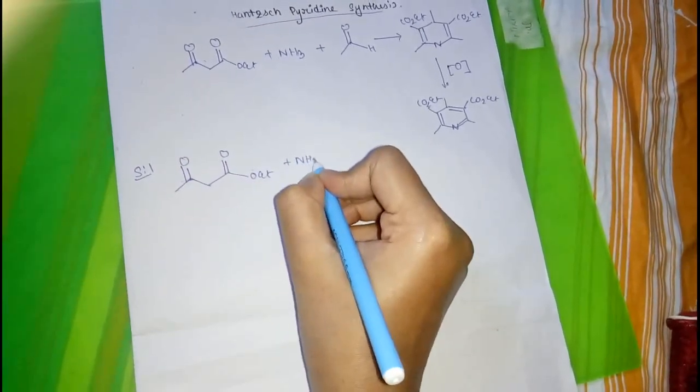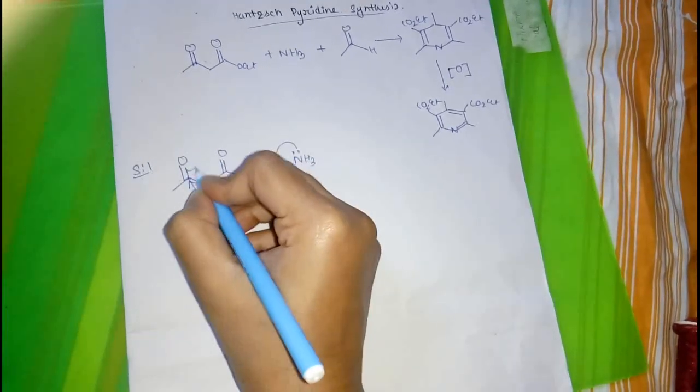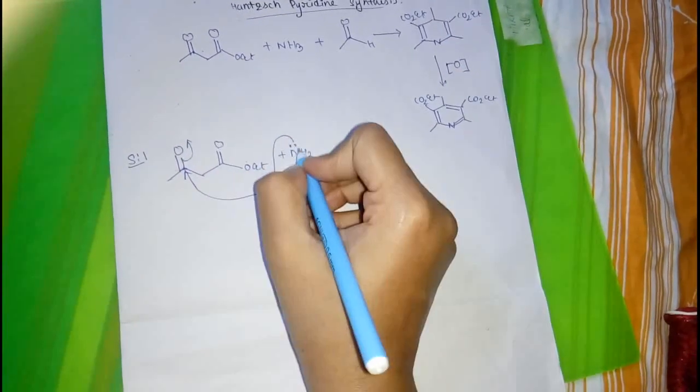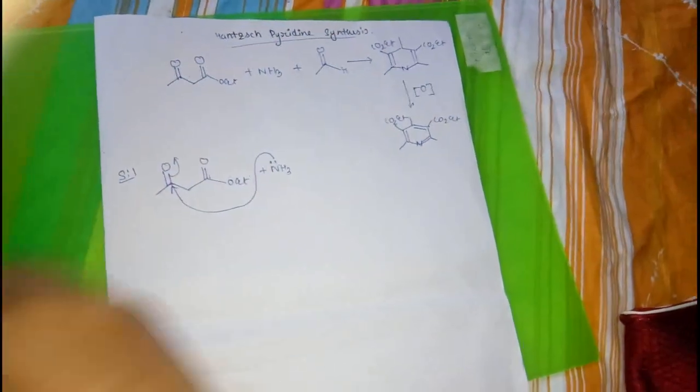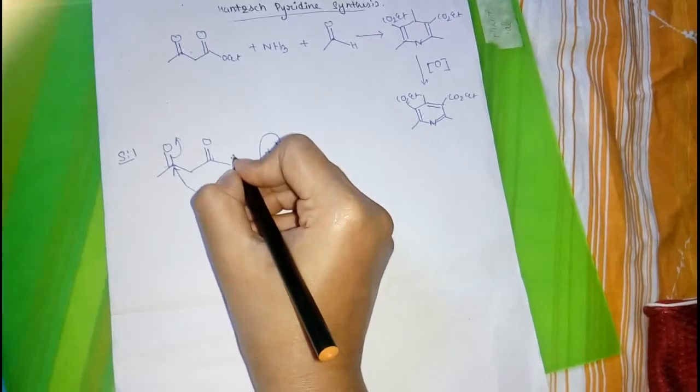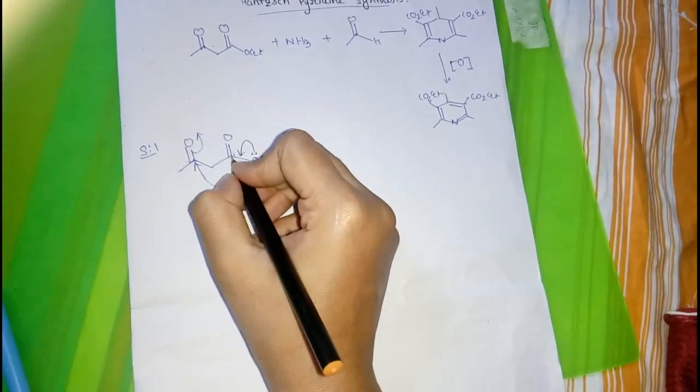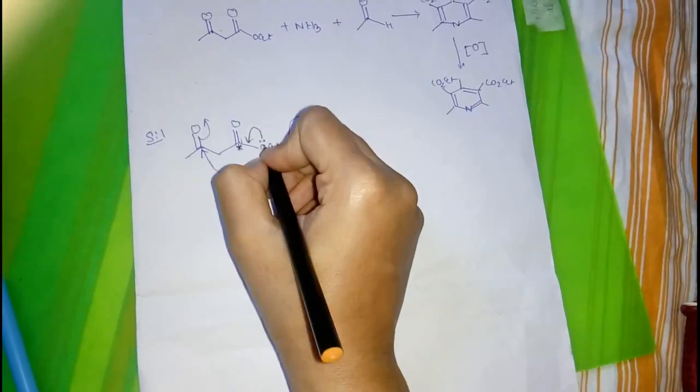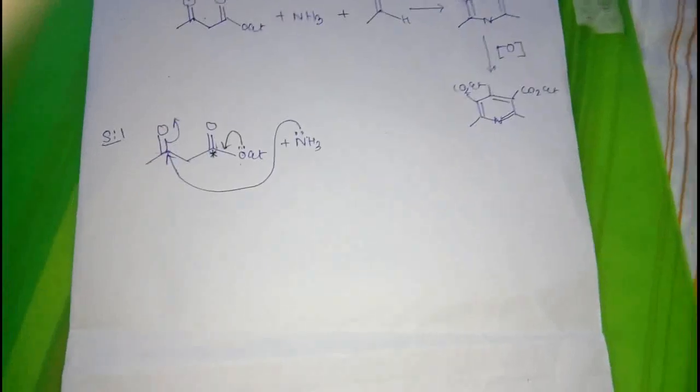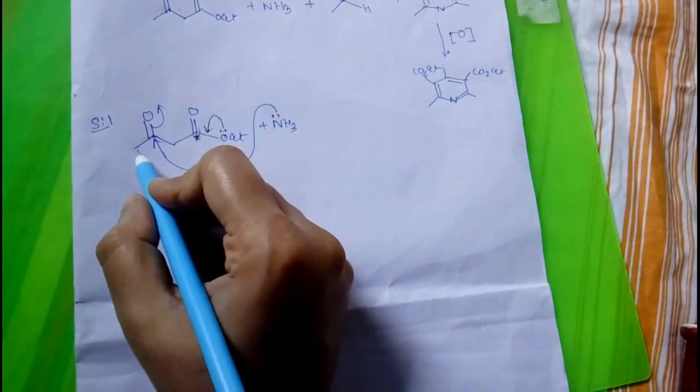Lone pair of ammonia will attack this carbonyl carbon. Now, this lone pair doesn't attack this carbon because this OET group has plus R effect, which reduces the electrophilicity of this carbonyl carbon. So, the reaction will proceed by attacking this carbonyl carbon.